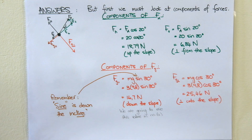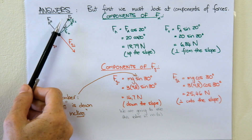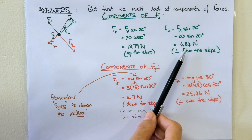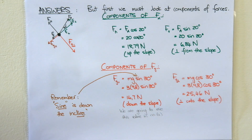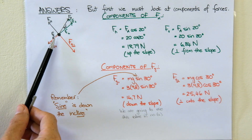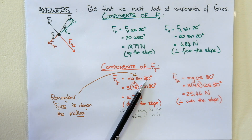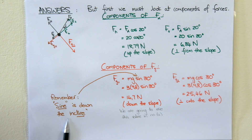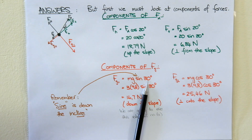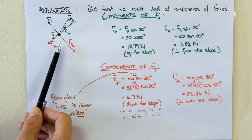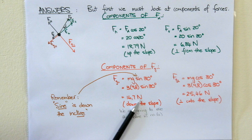The component perpendicular to the incline uses opposite over hypotenuse, so we use sine. The applied force component perpendicular to the slope is 20 times sine of 20, giving 6.84 newtons perpendicular upward from the slope. For the gravitational force components: the parallel one is Mg sine of the angle of the incline, which was 30 degrees — remember sine is down the incline. So it's 3 times 9.8 times sine of 30, giving a force down the incline of 14.7 newtons.